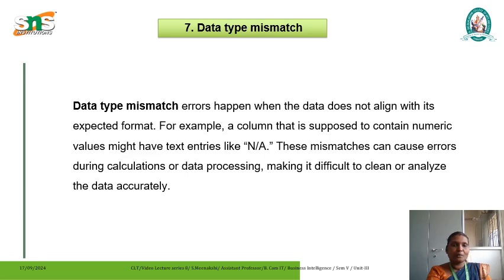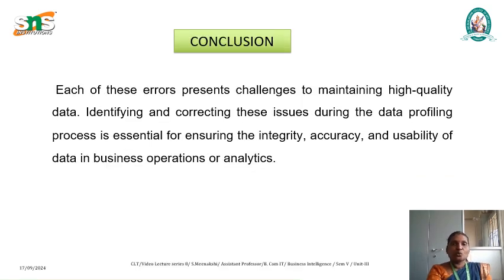The final type of error is called data type mismatch. As the name indicates, these errors happen when the data does not align with its expected format. For example, a column that is supposed to contain numeric values may have text entries like 'Not Applicable' or 'N/A'. These mismatches can cause errors during calculations or data processing, making it very difficult to clean or analyze the data consistently. Each of these errors presents challenges in maintaining high quality data. Identifying and correcting these issues during the data profiling process is essential for ensuring the integrity, accuracy and usability of data in business operations or analytics.